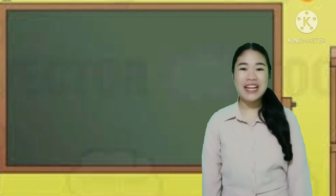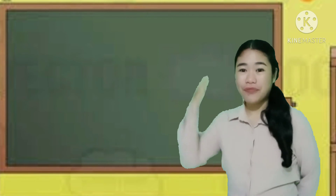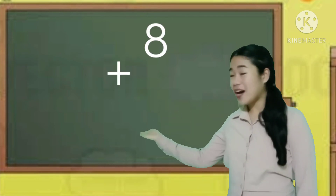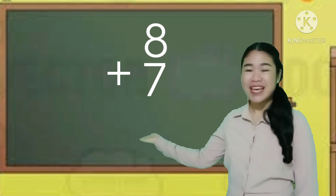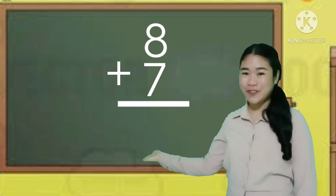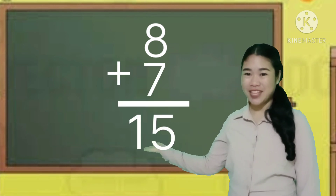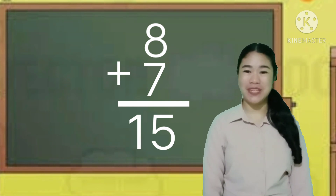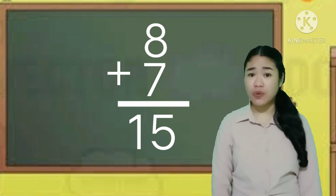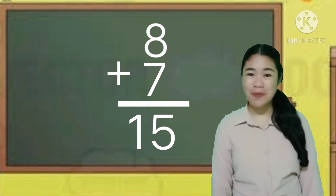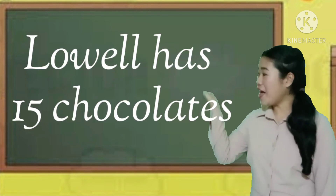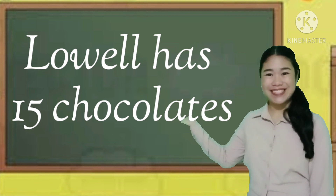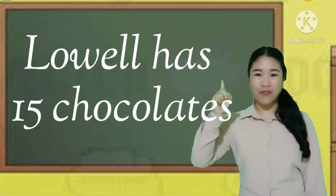Now, let us solve the numbers vertically. 8 milk chocolates plus 7 white chocolates is equal to 15 chocolates. Always write your answer in a complete sentence. So, our answer to this problem is: Lowell has 15 chocolates. Problem solved! Bye!